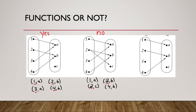For our last one, we have 1 going to a, 2 going to b, and 4 going to b. Your x values are all different — 1, 2, and 4 — so therefore, this is a function.